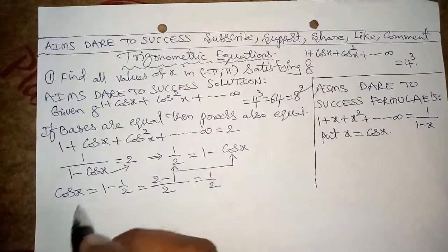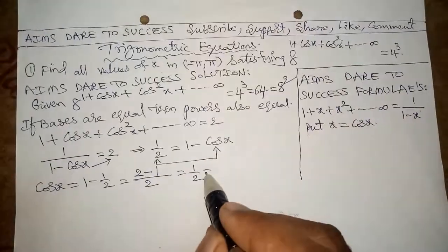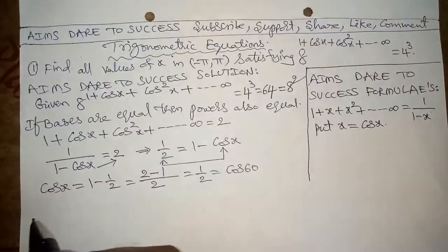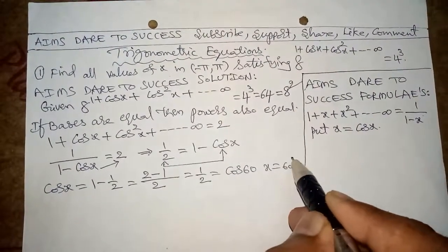This is in terms of cos x. So here 1/2 value in terms of cos x, I want to write cos 60°. So cos cancels with cos. x equals 60.